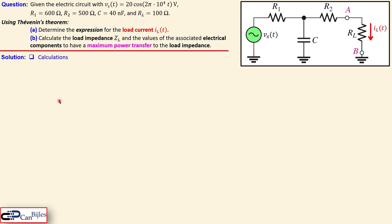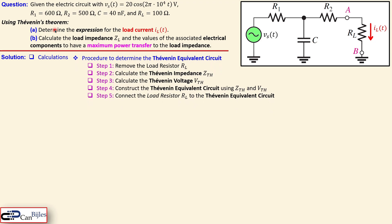Let's first look at our calculations in situation A. The procedure for determining the Thevenin equivalent circuit goes as follows: step one is removing the load from the circuit; then calculate the Thevenin impedance ZTH; then calculate the Thevenin voltage VTH; then construct the Thevenin equivalent circuit using ZTH and VTH; and finally connect your load RL or load impedance.